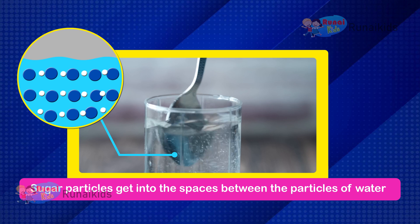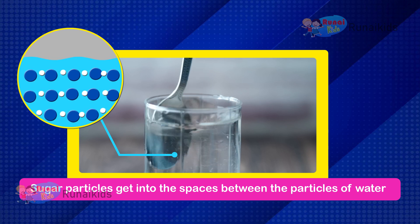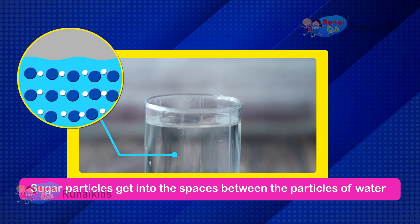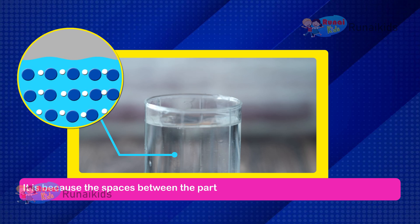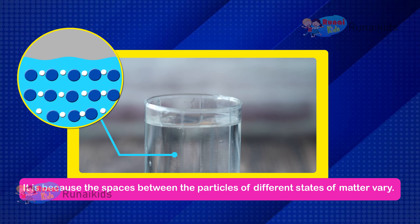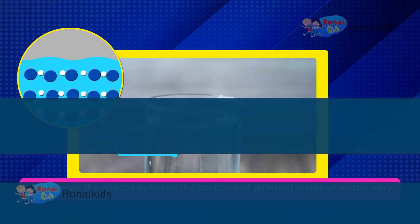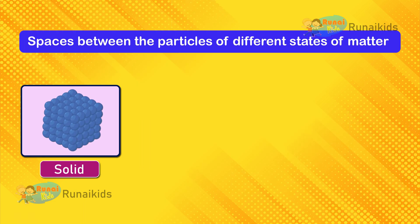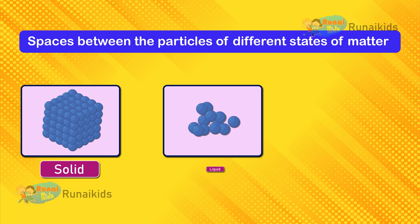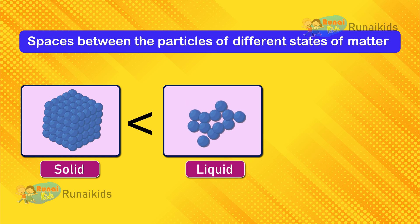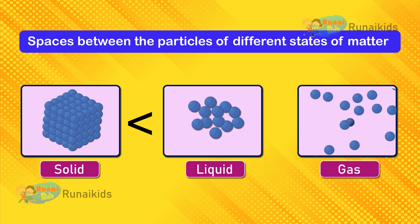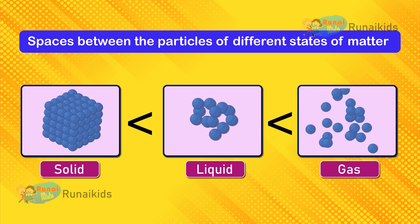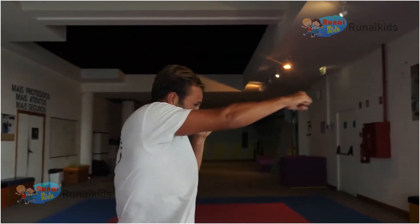But why do only the sugar particles get into the spaces between the particles of water? It is because the spaces between the particles of different states of matter vary. In solid, inter-particle space is less; in liquid, it is more than in solid; and in gas, the particles are far away from each other.